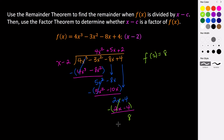So we have a remainder of 8, and we have confirmed that x minus 2 is not a factor because it does not divide evenly into our polynomial.